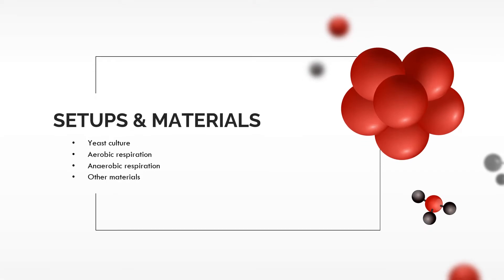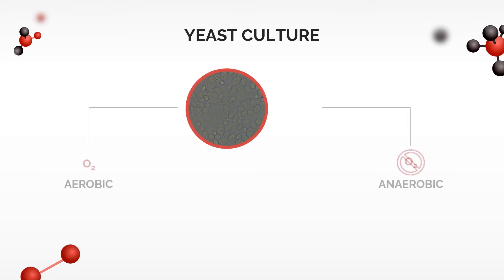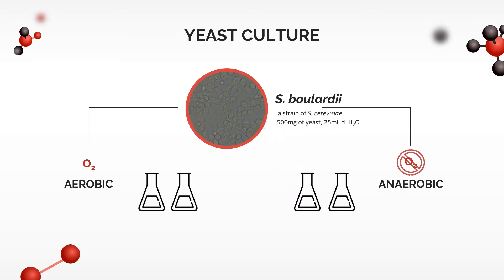The next section describes the setups and materials that were needed in order to perform the experiment. The reactor component for both aerobic and anaerobic testing conditions was made of the yeast culture Saccharomyces boulardii, a strain of Saccharomyces cerevisiae, suspended in 50 ml Erlenmeyer flasks. Each flask contained 500 mg of the yeast mixed with 25 ml of distilled water. Four of these reaction chambers were prepared in total. For each of the two testing conditions, one served as a control, while another served as a test sample, with 1.5 g of D-glucose used to activate reactions.